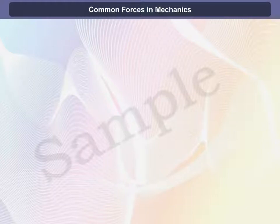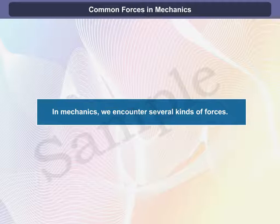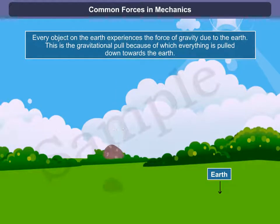Common forces in mechanics. In mechanics we encounter several kinds of forces. Every object on the earth experiences the force of gravity due to the earth. This is the gravitational pull because of which everything is pulled downwards towards the earth.